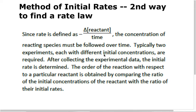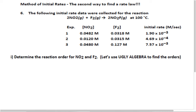Today we're doing it mathematically with experimental data in something called method of initial rates. I want you to pay attention to what data you need to actually do this process. I've seen students try to do this process on sets of data that had nothing to do with this. You need to have different experiments where somebody varied the concentrations — the initial concentrations of the reactants — and at the moment they put the reactants together, they measured the initial rate.